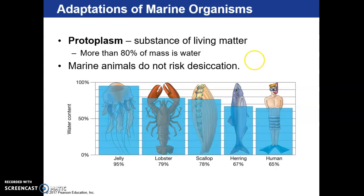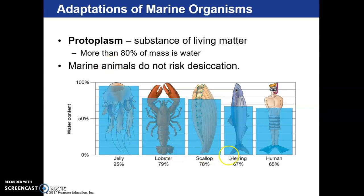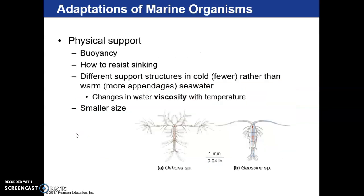In humans and marine creatures, protoplasm is primarily made up of water. Humans are 65 to 70 percent water, and marine creatures are almost exclusively more than that depending on what they are. So they don't risk desiccation — they don't risk drying out — because their protoplasm, their living matter, is made up highly of water. This is why fish have to live in water.